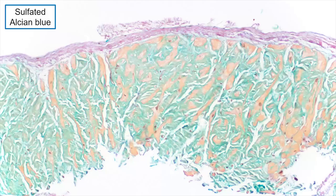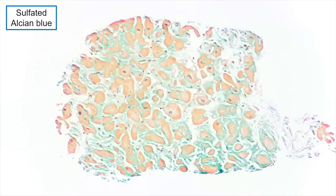Starting with the sulfated alcian blue stain — a very nice stain for screening that can pick up very small amounts of amyloid easily. The myocytes appear orange, and the sulfated alcian blue shows all of this green, almost completely overtaking this piece of tissue. On the second piece it's really obvious too — there's green everywhere where there shouldn't be. The amyloid becomes very obvious on this stain. We use this at Mayo for essentially all of our cases, though not all labs have this stain or proficiency with it.